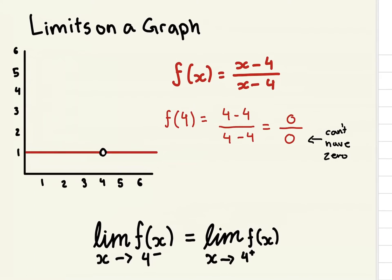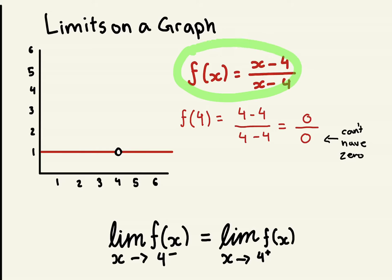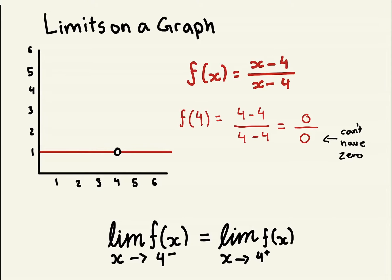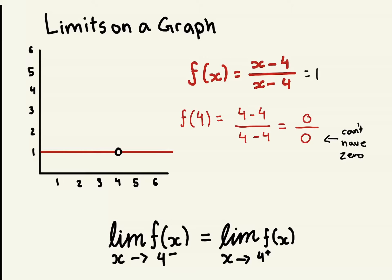You can see limits on a graph. Take this equation as an example: f(x) = (x − 4) / (x − 4). You might think anything over itself equals 1 — for example, 5/5 = 1 — so x minus 4 over x minus 4 equals 1. You'd be right, except you have to consider that if you plug in x = 4, you get 4 minus 4 over 4 minus 4, which gives 0 in the denominator, and that doesn't work mathematically. So this is equal to 1, with the exception that x cannot equal 4.